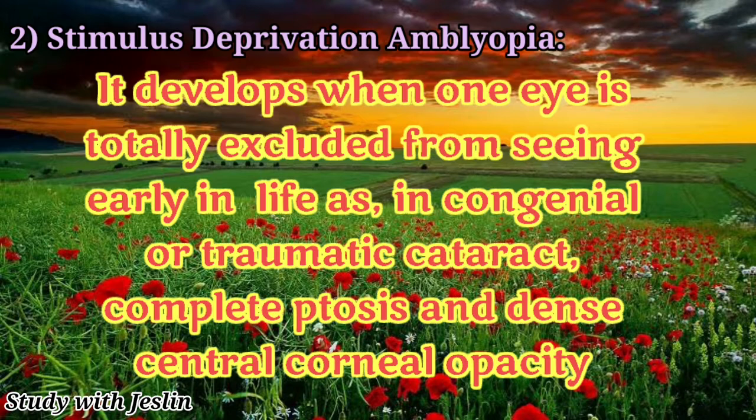Another cause is dense central corneal opacity. The cornea is normally transparent, but sometimes it becomes opaque. Because this cornea blocks light, vision cannot properly form. That is why amblyopia comes from stimulus deprivation. These are three reasons that amblyopia will arise from stimulus deprivation.